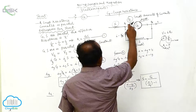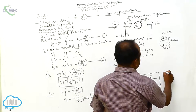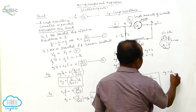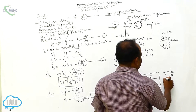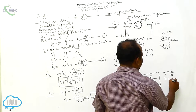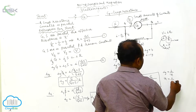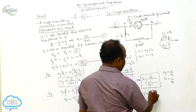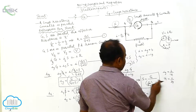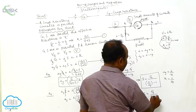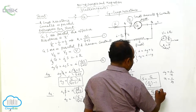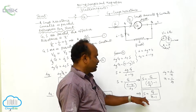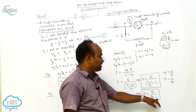What is the current passing through the galvanometer? Ig is equal to I by N. Therefore, N is equal to I by Ig. Now, S by G equals I by Ig minus 1, which equals N minus 1. Therefore, the expression for shunt resistance is S is equal to G by (N minus 1).